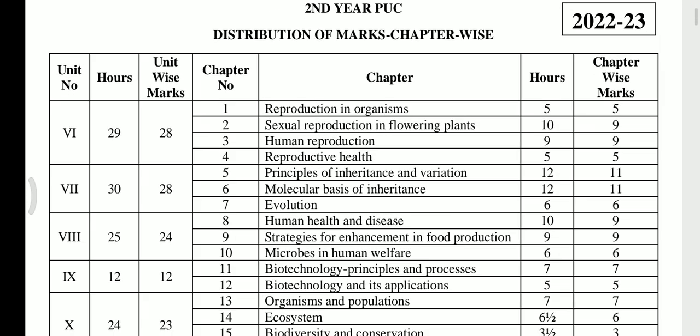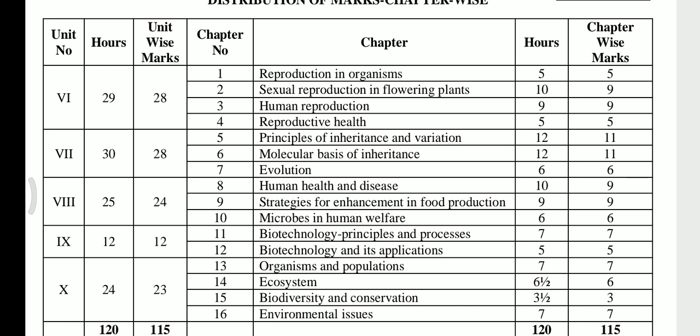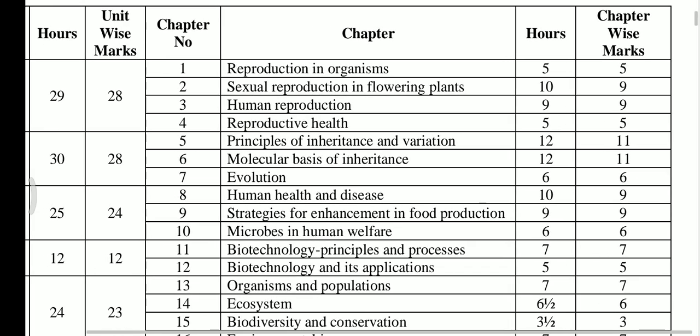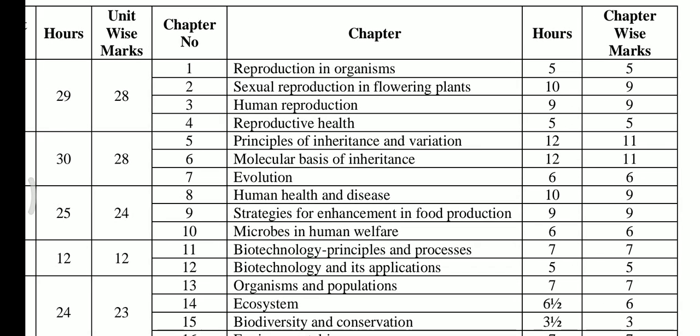Looking at the chapter-wise weightage, Unit 6 carries a total of 28 marks. The chapters in Unit 6 are: Chapter 1, Reproduction in Organisms, is for 5 marks; Sexual Reproduction in Flowering Plants is for 9 marks; Human Reproduction is for 9 marks; and Reproductive Health is for 5 marks.